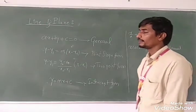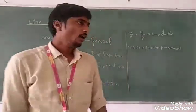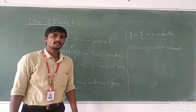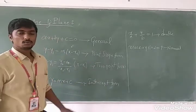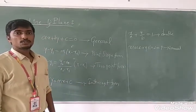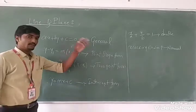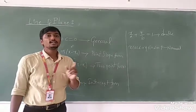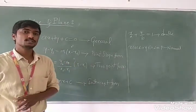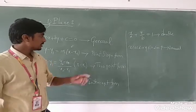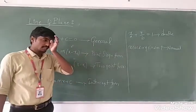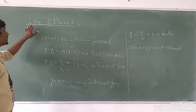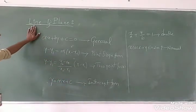These are all the forms of straight lines defined in two-dimensional geometry. To define a straight line we need at least one point, or in the case of the two-point form, at least two points. This is what two-dimensional geometry gives us, and the first chapter — line and plane — builds on this.